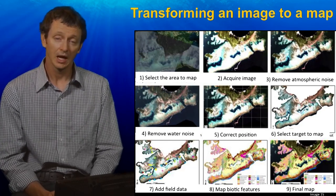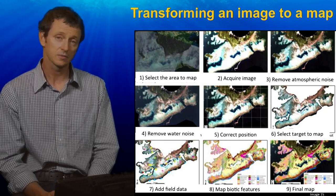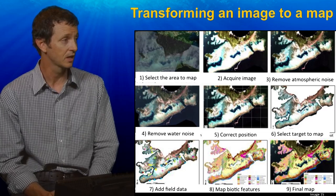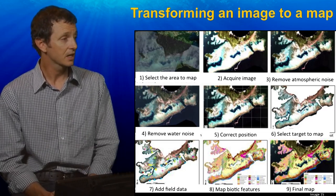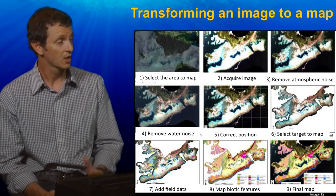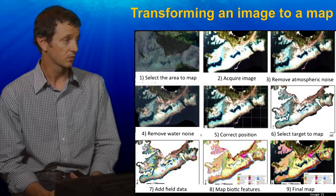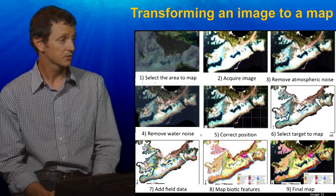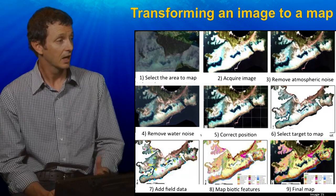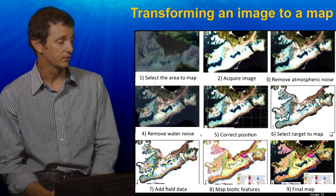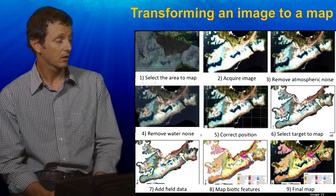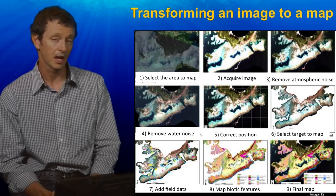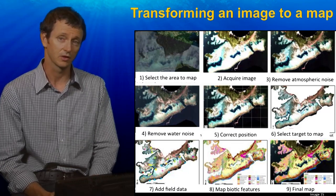To transform an image into a map useful for scientific or management applications, we go through a number of standard operations in remote sensing or image processing. Looking at the sequence of nine images to the left, we start in the top left with a raw image, and to get to the final map in the lower right, we go through a series of steps that correct the images and remove distortions. We then use field information, expert knowledge, and algorithms to transform each pixel value into a representation of what's on the ground or sea floor. In this case, it's an area of Fiji where we're mapping coral, macroalgae, and seagrass. The completed map can then be compared to field survey information to check its accuracy.